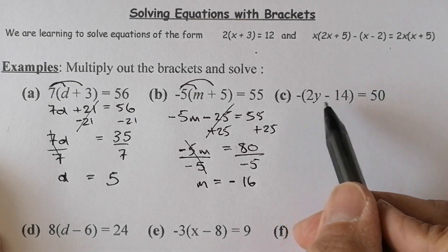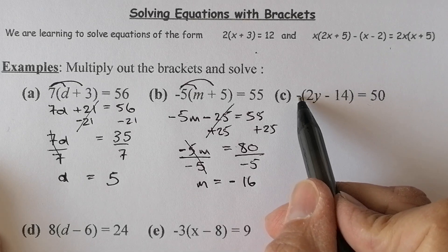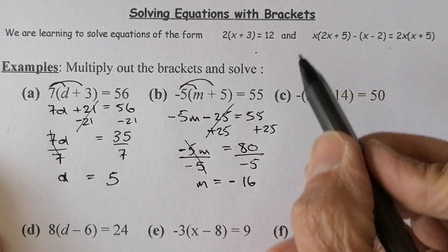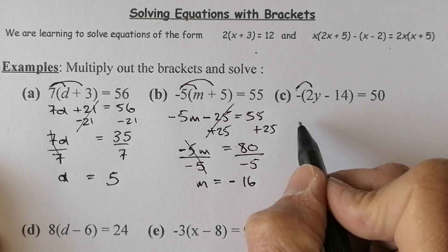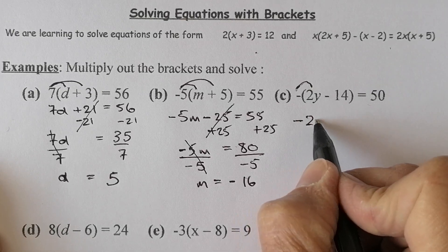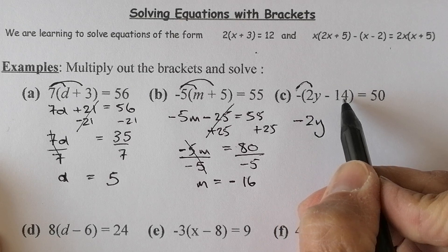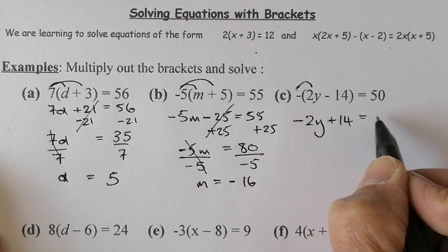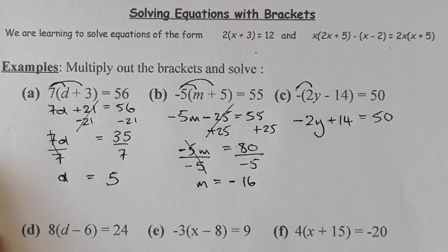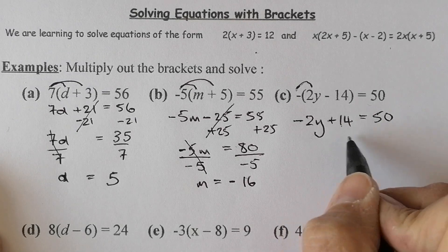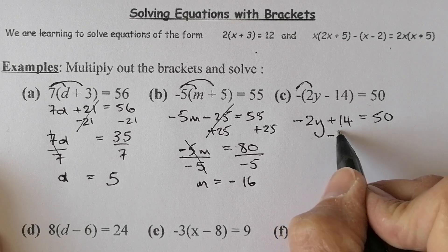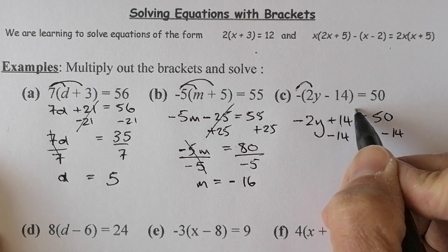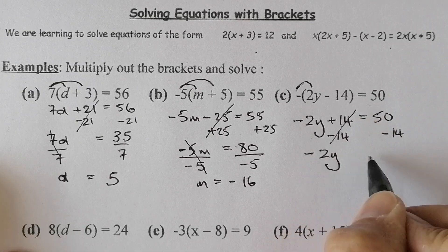This type of question sometimes gets a bit confusing. If I've got a minus sign at the front, remember it's minus 1 that's sitting there. So I'm going to go for minus 1 times 2y, which gives me minus 2y. And minus 1 times minus 14 — two negatives in the calculation — gives a positive 14. Then I've got 50 on the right. I'm going to subtract 14 from the left-hand side and also from the right.